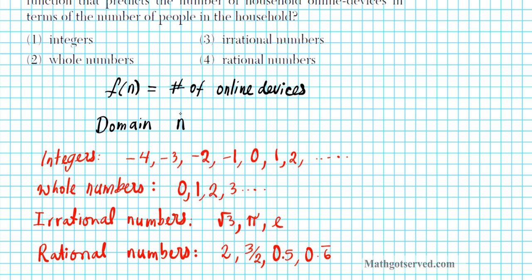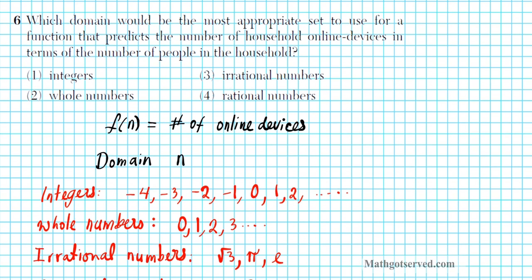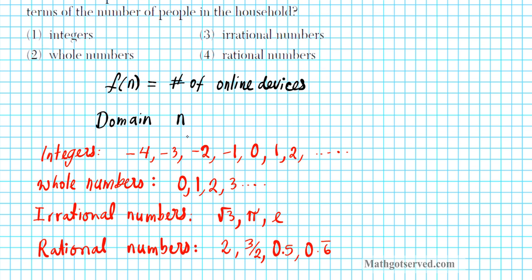Now we're talking about people. Which of these sets can be used to describe the number of people in a household? For integers, if we can find just one counterexample — one inappropriate number — the whole set is inappropriate. Can we have negative people in a household, like negative 2? The answer is no. So since you can't have negative people, integers is not an appropriate domain.